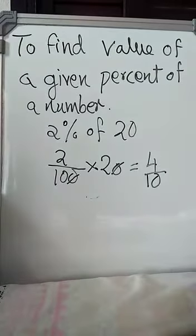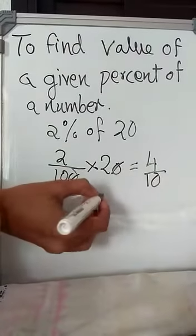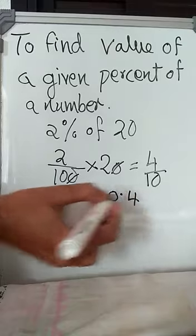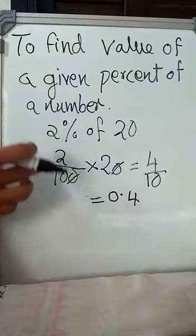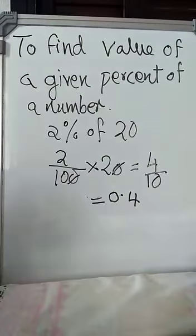Now 4 by 10, so 4 by 10 you can write as a decimal. Right, what is 4 by 10? You will write it as 0.4. So 2% of 20 is 0.4. So here you got the answer as a decimal number.